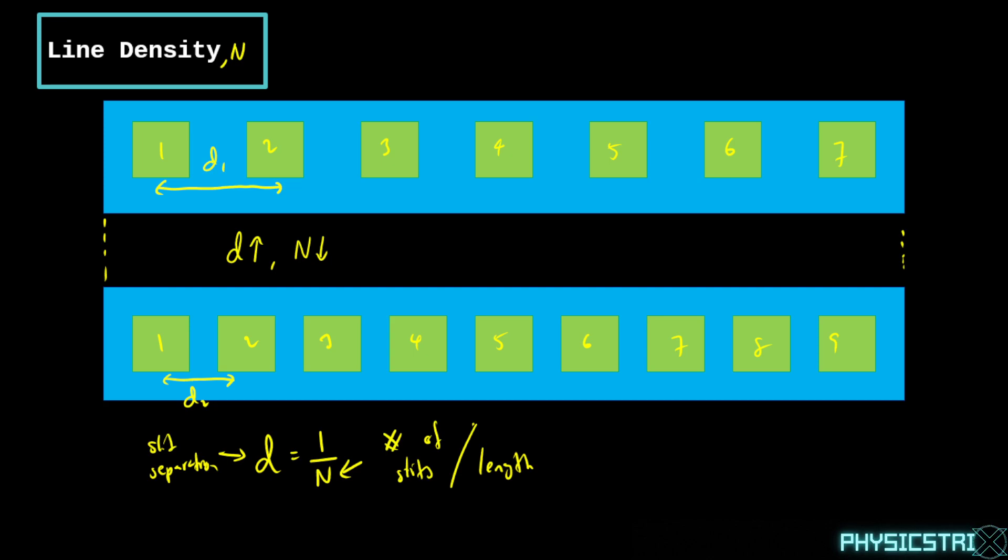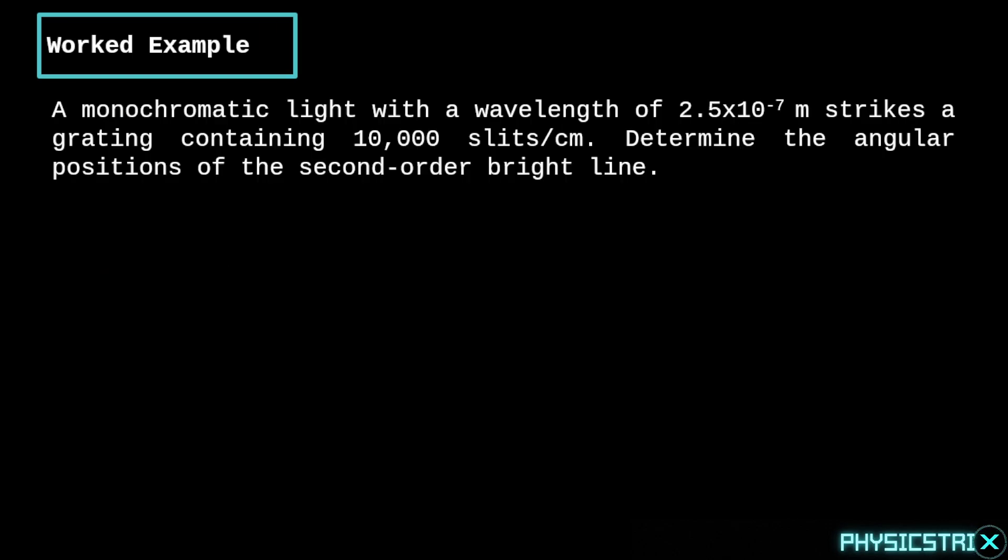Once we know these two equations, we can start working on questions. Here's a sample question that I'm going to present you with the solution. And then you can carry that over to your own practices, maybe in tutorials or past year questions. Let's read the question. A monochromatic light with a wavelength of 2.5 times 10^-7 meters strikes a grating containing 10,000 slits per centimeter. Determine the angular positions of the second order bright line.